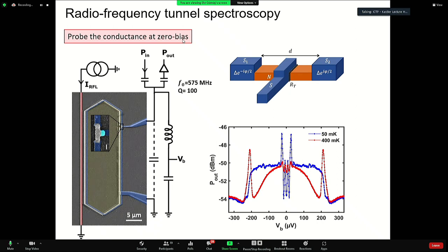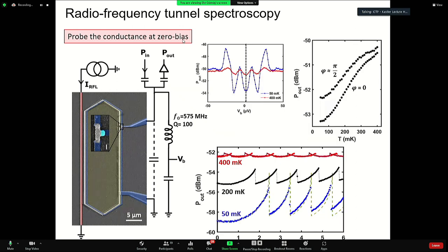Its signature we see at the zero bias as a zero bias conductance. It has been shown that the temperature dependence of this zero bias conductance can be used as a very sensitive thermometer.